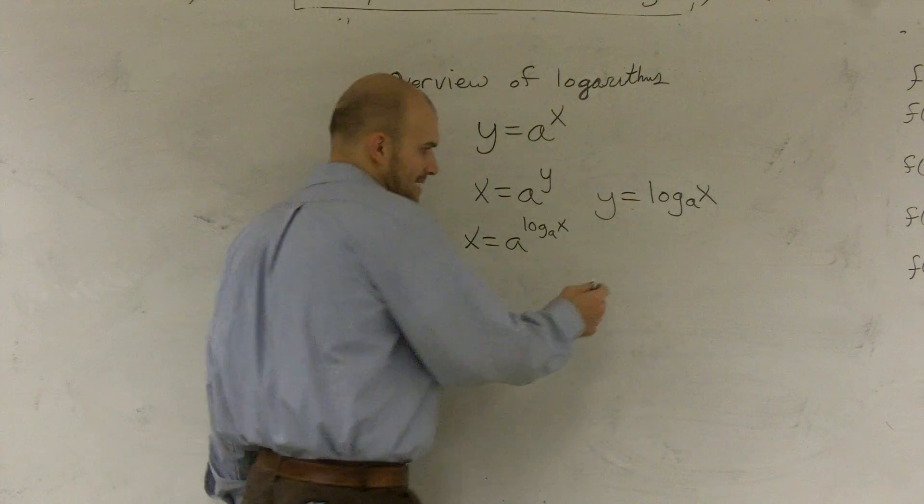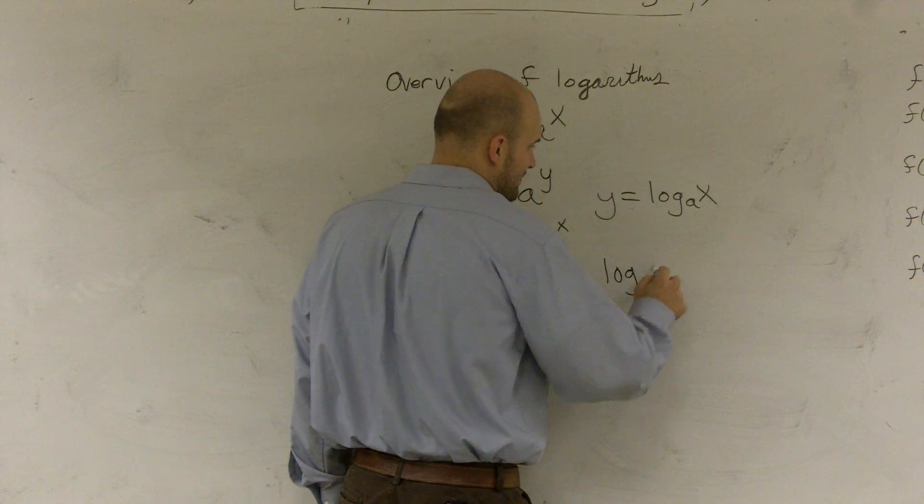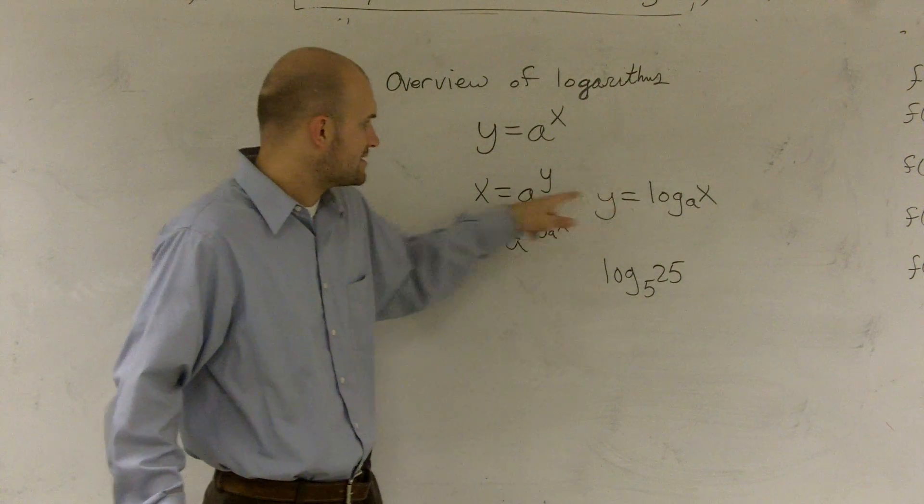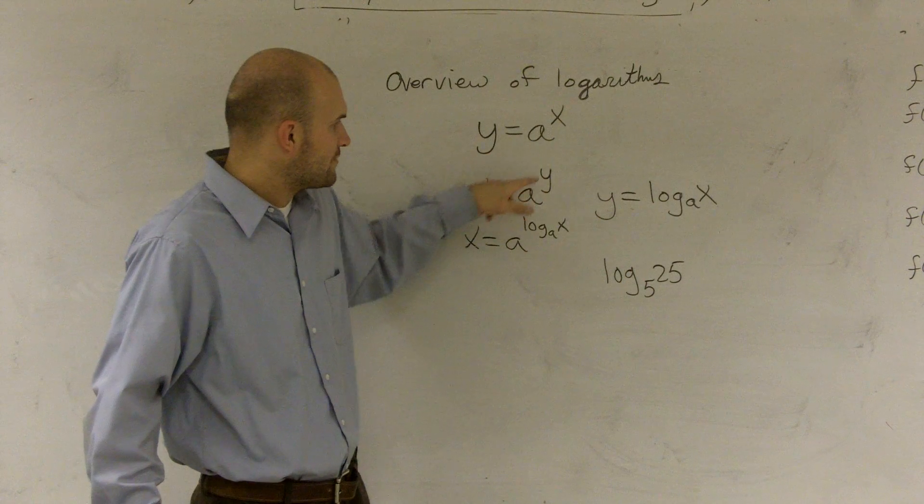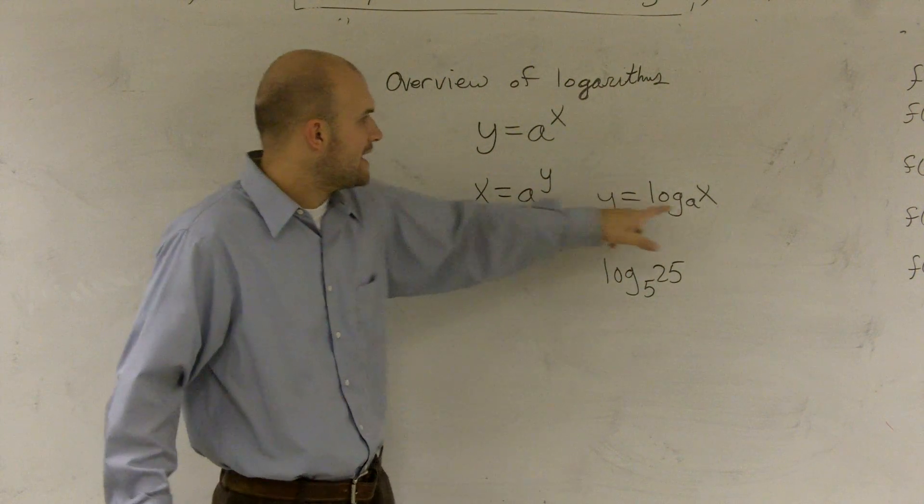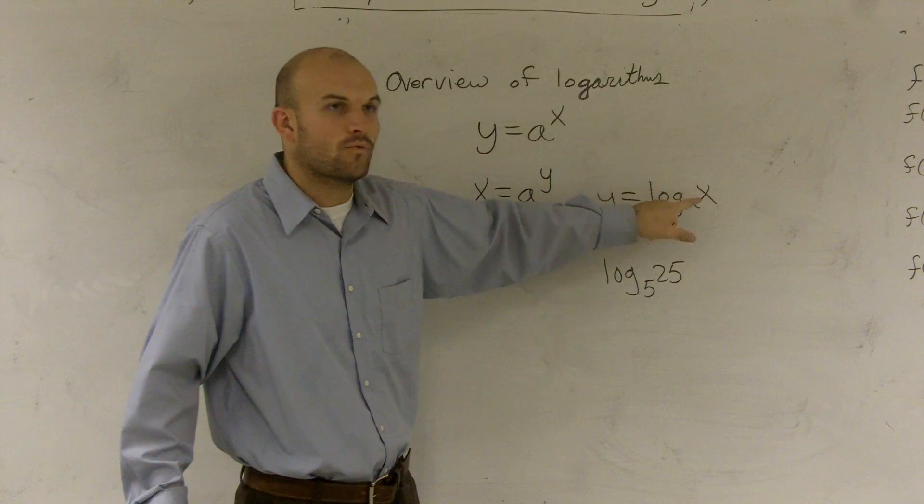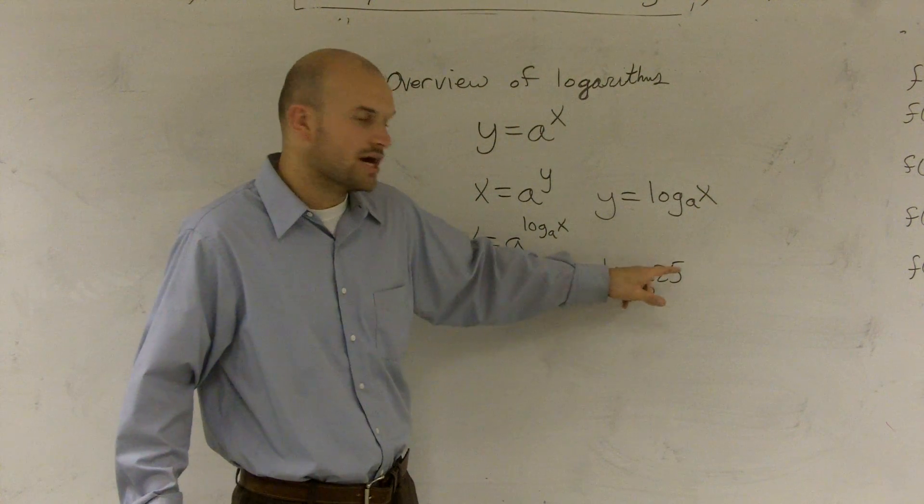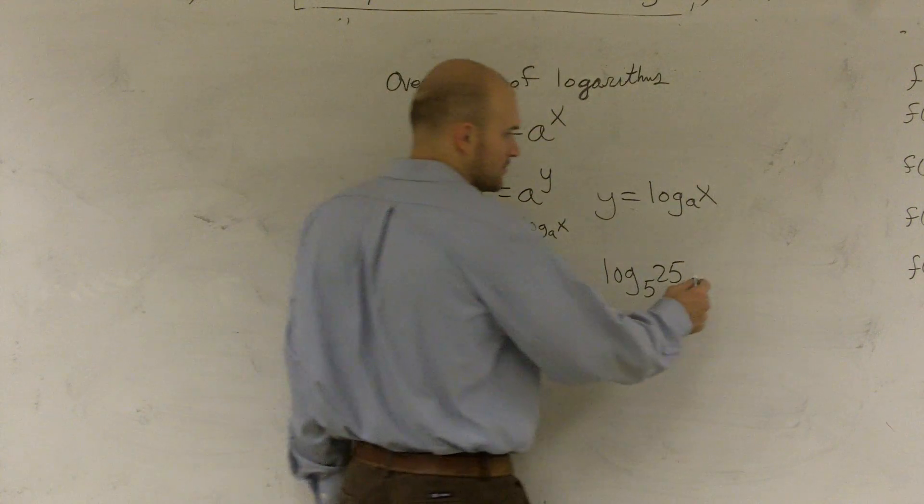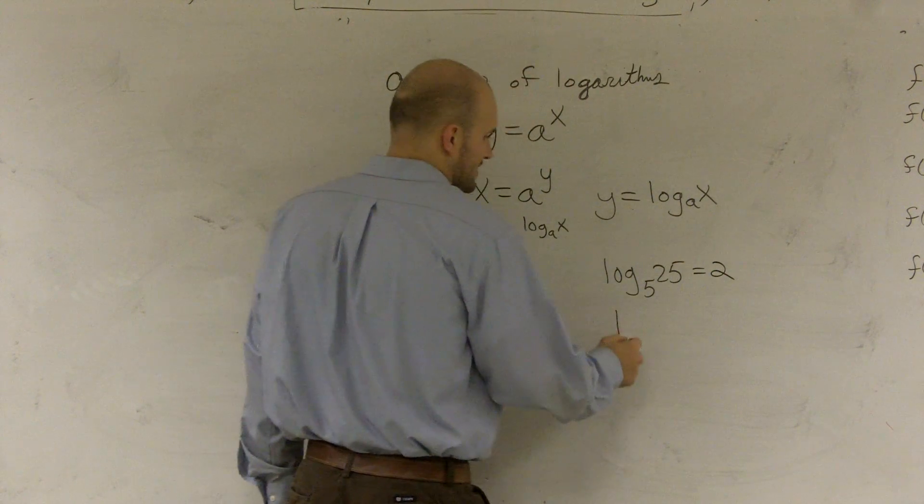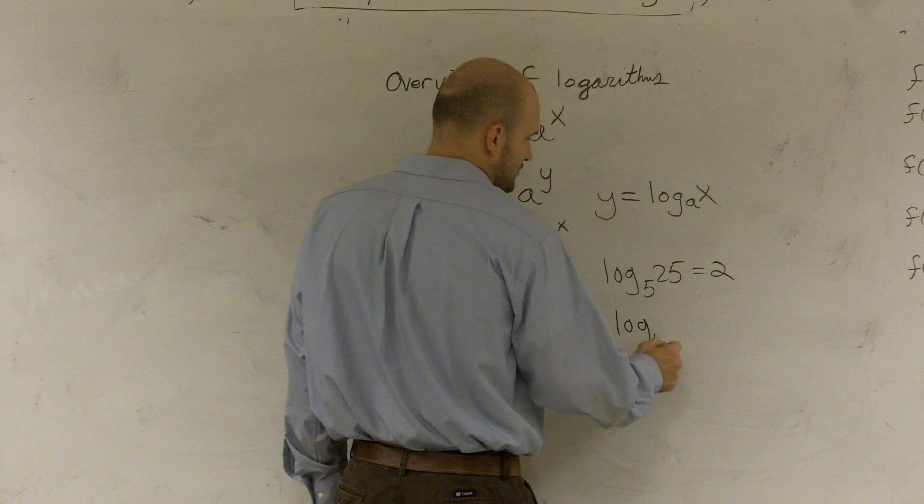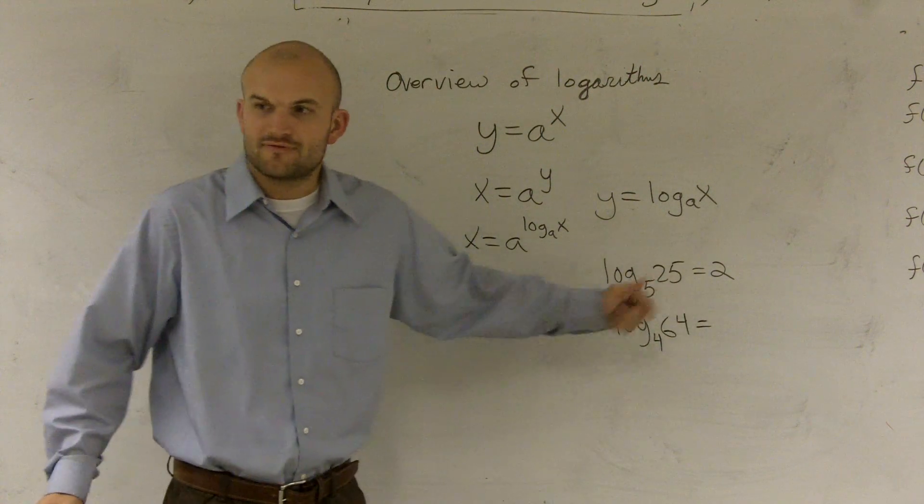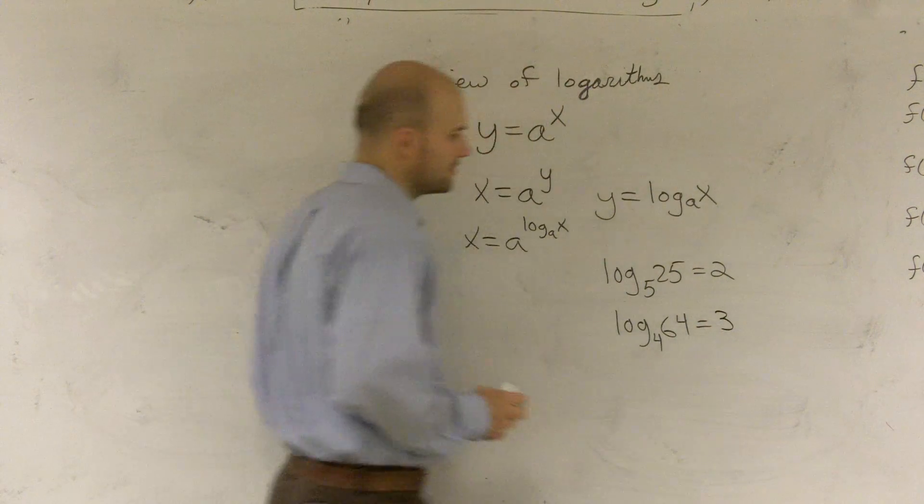So let's look at a couple examples. Let's take the log_5(25). So remember, this logarithm says what y is. A raised to y equals x. So a raised to what? A raised to what number gives me x? 5 raised to what number gives me 25? The answer to that is 2. If I did another one, log_4(64). So 4 raised to what number gives you 64? The answer to that is 3.